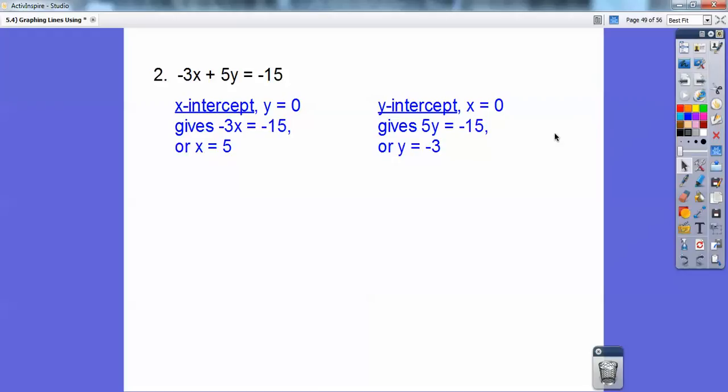To get the y-intercept, the x part goes away because I let x equal 0. So I'm left with 5y equals negative 15. And 5 goes into negative 15, negative 3 times.